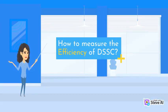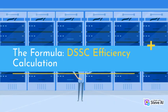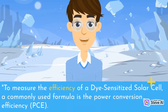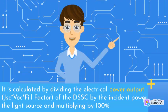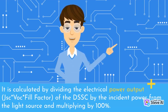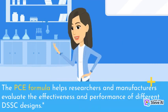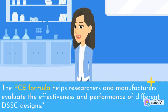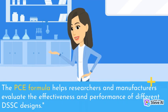How to measure the efficiency of DSSC? The Formula: DSSC Efficiency Calculation. To measure the efficiency of the dye-sensitized solar cell, a commonly used formula is the Power Conversion Efficiency (PCE). It is calculated by dividing the electrical power output — JSC × VOC × fill factor of the DSSC — by the incident power from the light source, and multiplying by 100%. This formula helps researchers and manufacturers evaluate the effectiveness and performance of different DSSC designs.